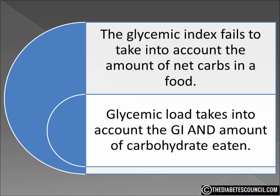There is a problem with just using the glycemic index. This is because researchers calculate the GI value of foods based on identical portions delivering 50 grams of carbohydrates. Glycemic load takes into account the GI and the amount of carbohydrates eaten. This is a much better indicator because it reflects both the type and amount of dietary carbohydrates and is much more practical for everyday use.